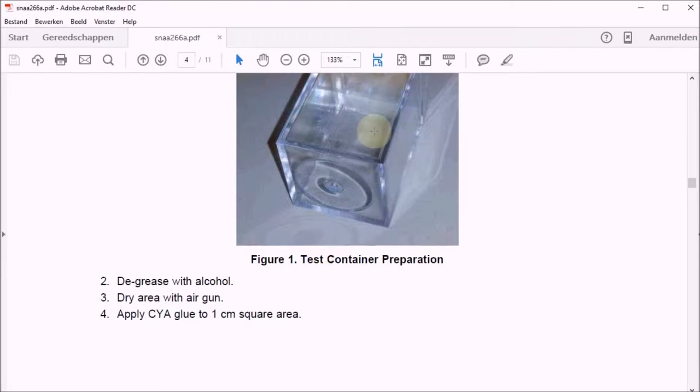Dry the area where you have degreased it with the hot air gun and apply the glue. But according to my glue documentation it says to first apply the actuator. So I'm going to follow those instructions.